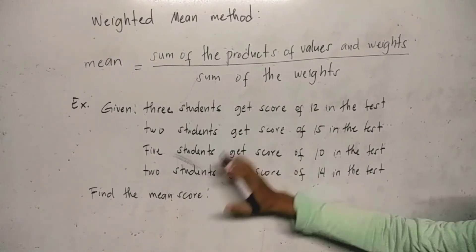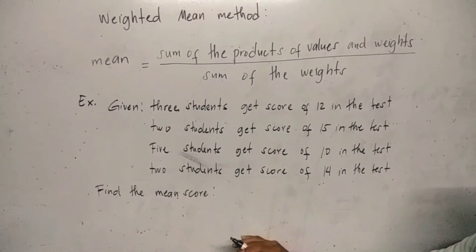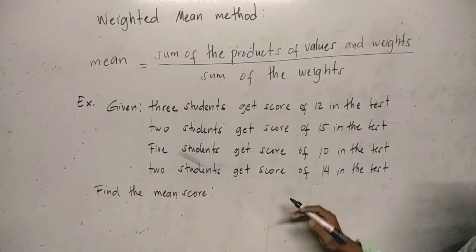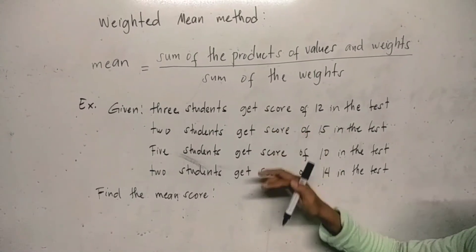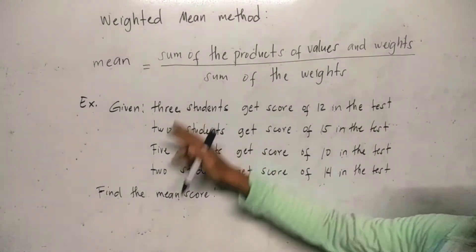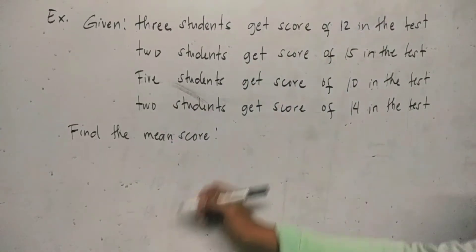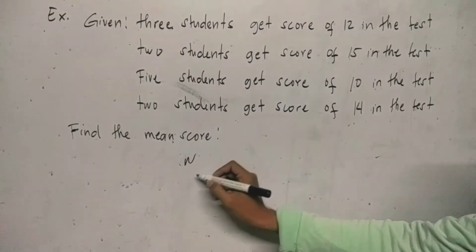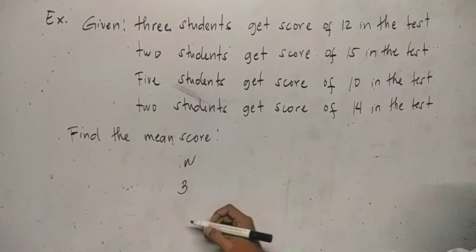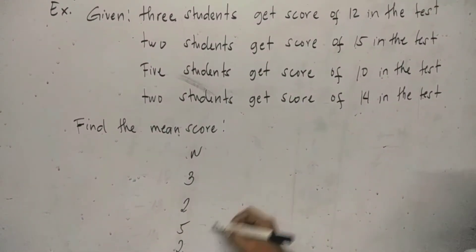As we observed in the example, we need to get the w and x, where w is the weights of corresponding values and x is the raw score or the values. The values we see here are 12, 15, 10, and 14. Therefore, the weights are the students. The value of w, corresponding values, we have 3 students, 2 students, 5 students, and 2 students.